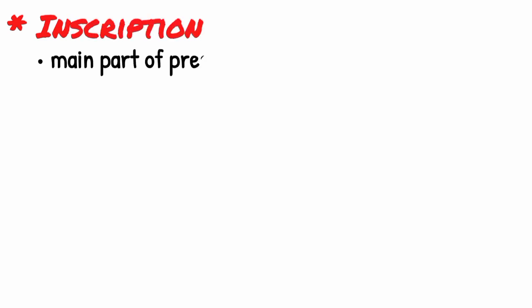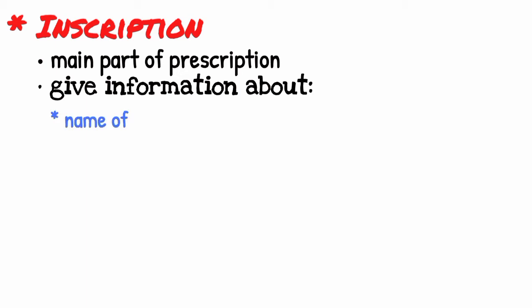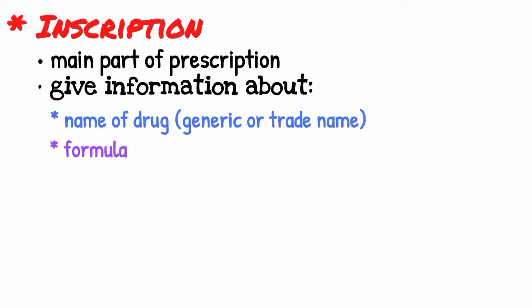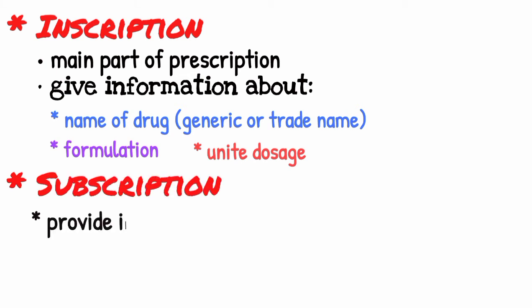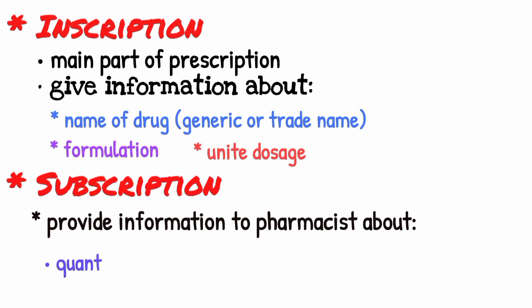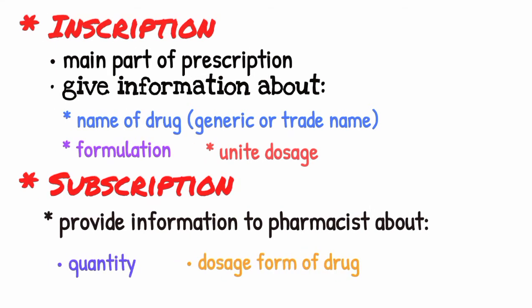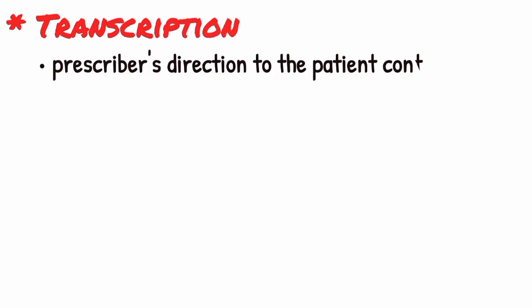Inscription is the main part of the prescription. It gives information about the name of the drug — either the generic or trade name — its formulation, and unit dosage. Subscription provides information to the pharmacist about the quantity and dosage form of the drug to be dispensed.